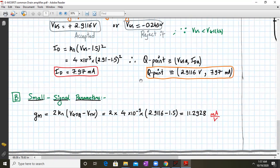From the Q-point we can determine the small signal parameters. The transconductance gm is given by 2×Kn×(Vgs - Vtn), which equals 2 × 4×10^-3 × (2.9116 - 1.5). Working this out gives gm = 11.2928 milliamperes per volt.